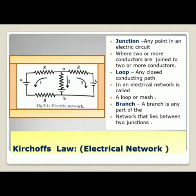Kirchhoff's Law for Electrical Networks can be studied with the help of this diagram. This is an electrical network showing a steady current flow through a network of resistors. You can see resistors 1, 2 and 3 in the diagram — two circuits connected together forming a loop. The first concept is Junction: any point in an electrical circuit where two or more conductors are joined. A loop is any closed conducting path in an electric network, also called a mesh.